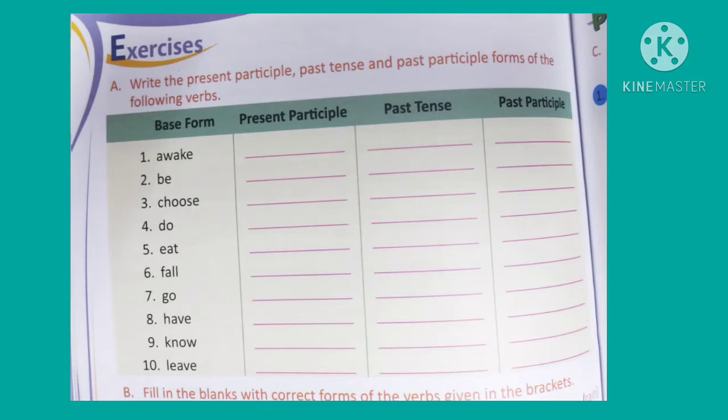First, present participle: the base form given is 'awake'. To form the present participle, we add -ing to the base form, giving us 'awaking'. The past tense, second form, is 'awoke'. The past participle, third form, is 'awaken'. So: awake, awaking, awoke, awaken.